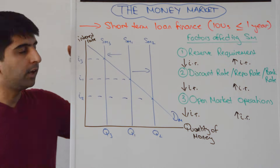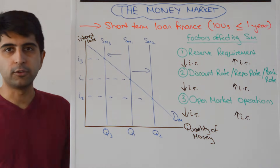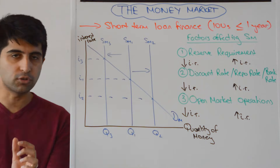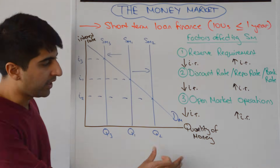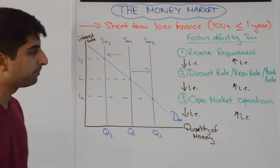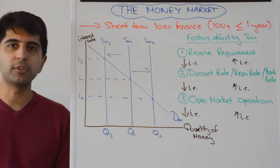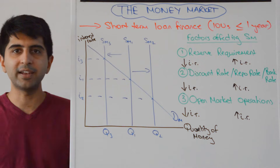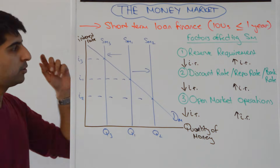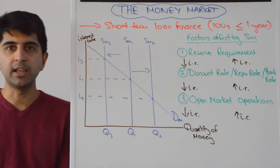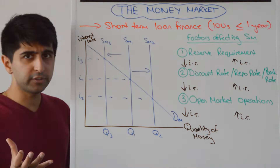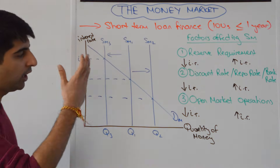I've drawn a money market here where on the y-axis we've got the price of money, which is the interest rate, and on the x-axis we have the quantity of money. The demand curve for money is downward sloping to reflect an inverse relationship between the interest rate and the quantity demanded for money.